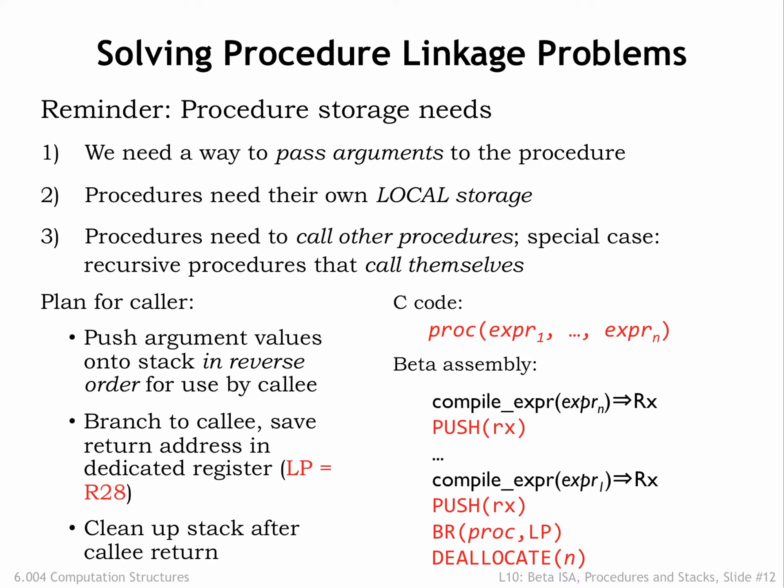After the argument values, if any, have been pushed on the stack, there's a branch to transfer control to the procedure's entry point, saving the address of the instruction following the branch in the linkage pointer, R28, a register dedicated to that purpose. When the callee returns and execution resumes in the caller, a deallocate is used to remove all the argument values from the stack, preserving stack discipline.